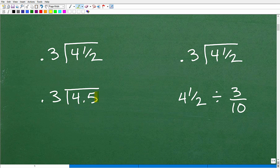I have 4 1/2 divided by 0.3. Well, 4 1/2 is the same thing as a decimal, 4.5. So I could just, you know, most people wouldn't be able to just interpret that. Oh, yeah, 4 and 1/2, 1/2 is 0.5.